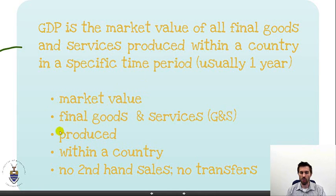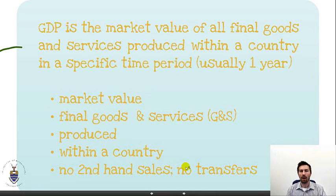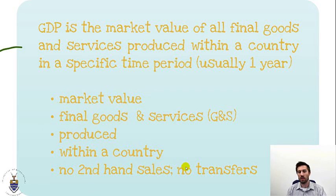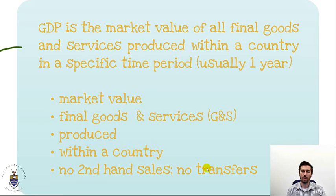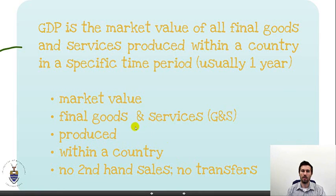Of course, these are things that are produced within our country — produced within South Africa. This means there are no secondhand sales included. And if someone is living off a social grant and receives money from the government, that does not get included in GDP, because it is not something that was produced within the country. It was simply transferred from one person to another.